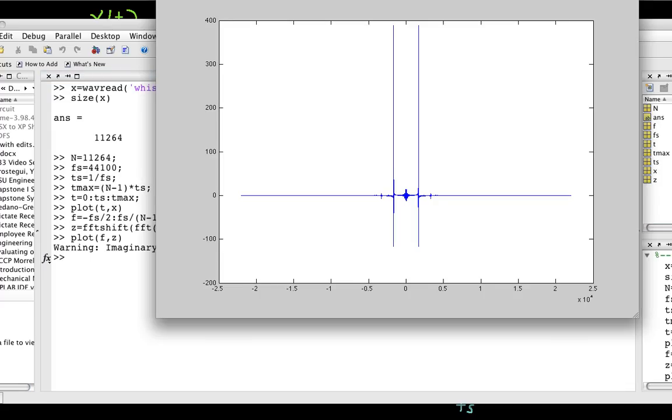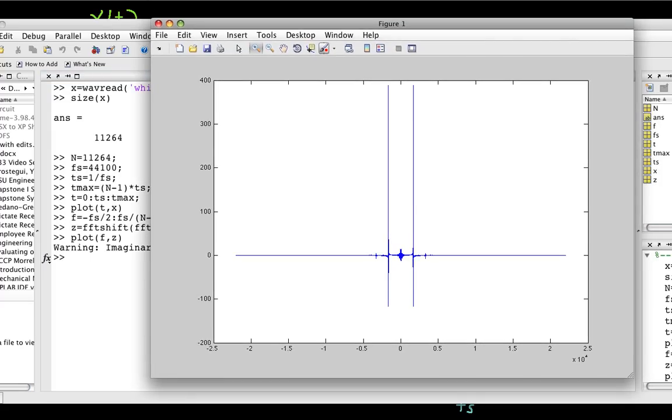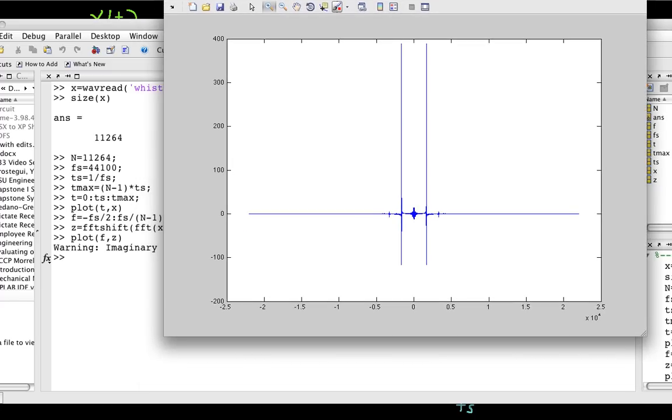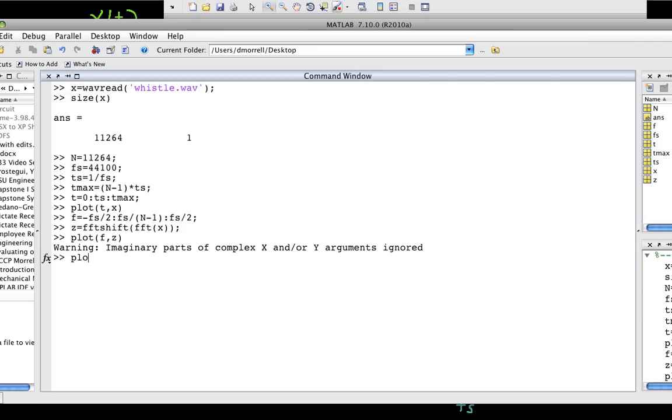Whoops. So, what this shows me now is the real part of the Fourier transform. Now, you've got to remember that Fourier transforms are complex. So, this is probably not what I really want to have. So, what I really thought I wanted to have was F, abs of z. This gives me the magnitude spectrum.